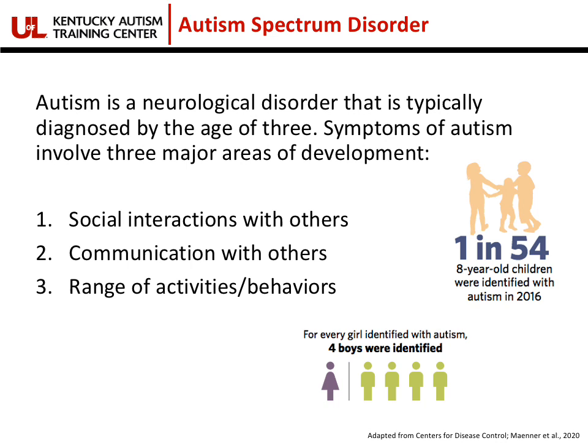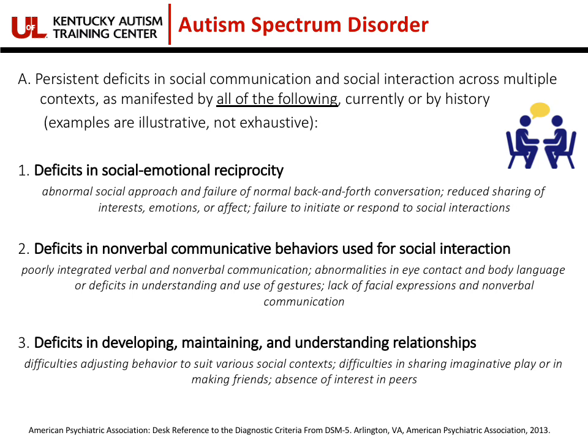Autism is a neurological disorder typically diagnosed by the age of three, and affects three main areas of development: social interactions with others, communication with others, and the range of activities or behaviors. The most recent statistics from the Centers for Disease Control show that one in 54 children are diagnosed with autism, and out of those, for every four boys identified, there was one girl identified with autism.